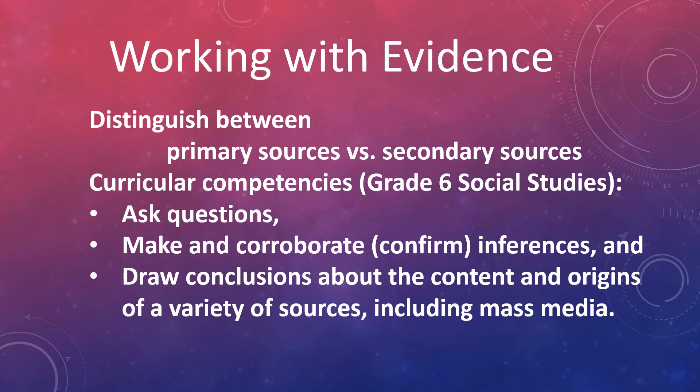Both primary and secondary sources need to be evaluated in terms of their trustworthiness, accuracy, fairness, and completeness. Primary sources of evidence are documents and other artifacts created in history by people living the history, whereas secondary sources are things like textbooks created by historians analyzing or summarizing what happened in history, as opposed to by the people who were actually living it.